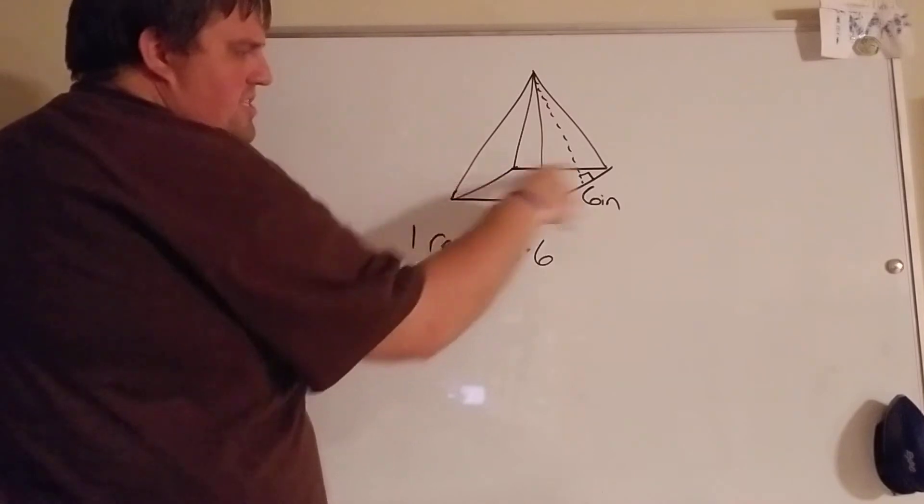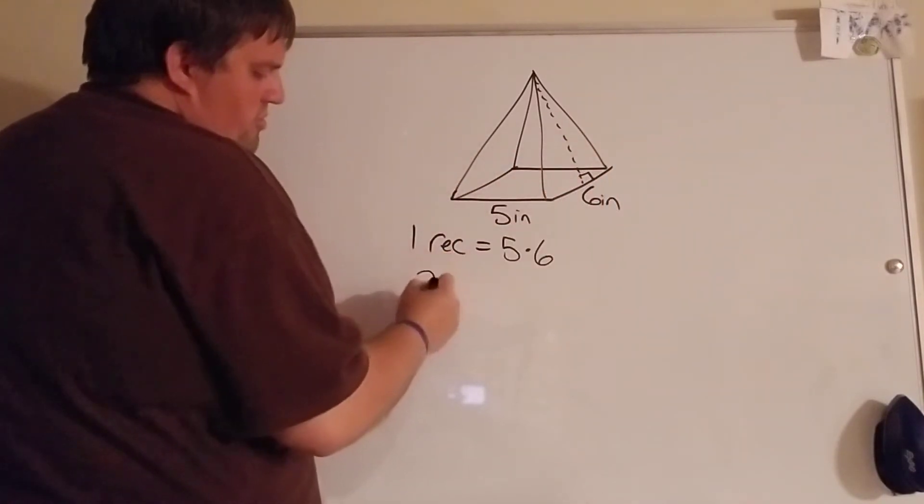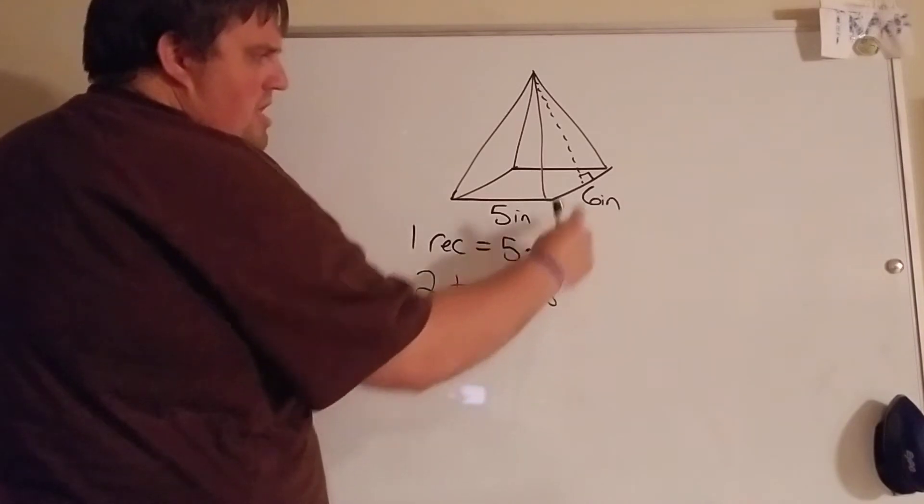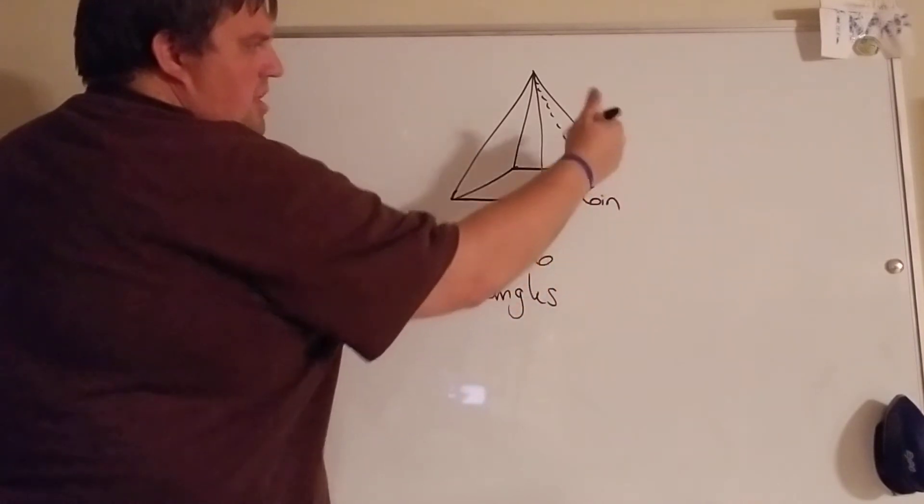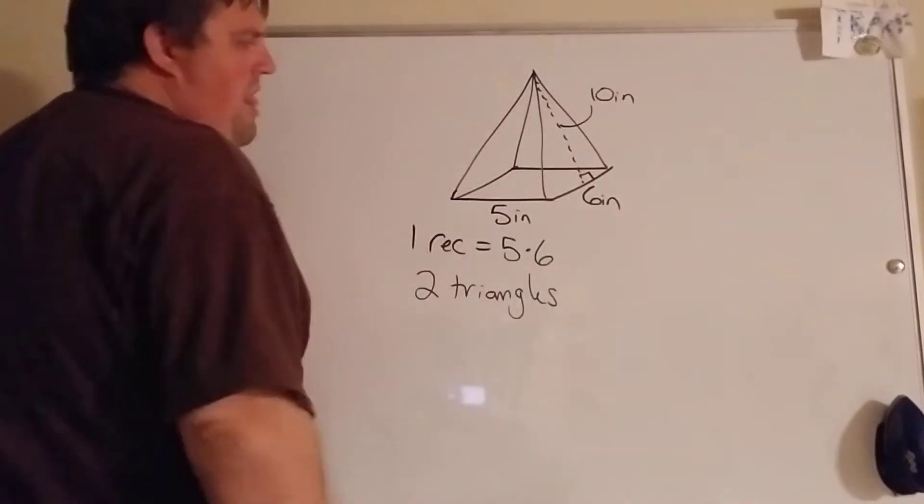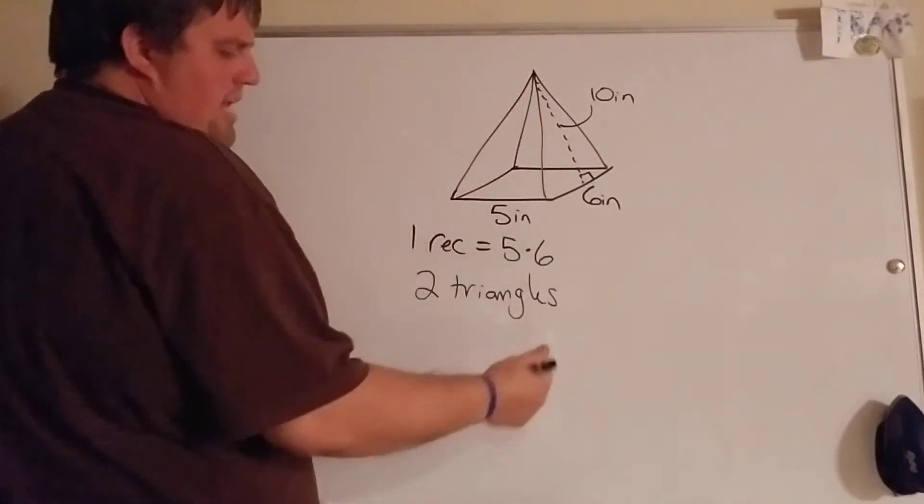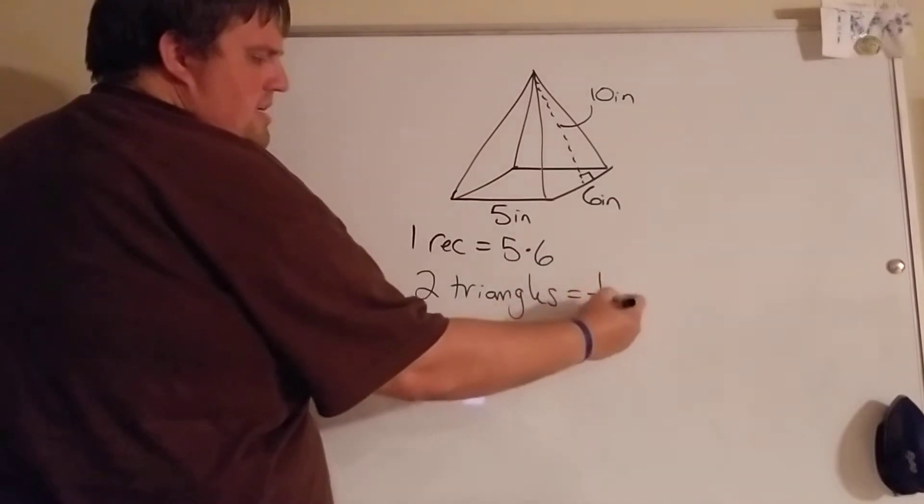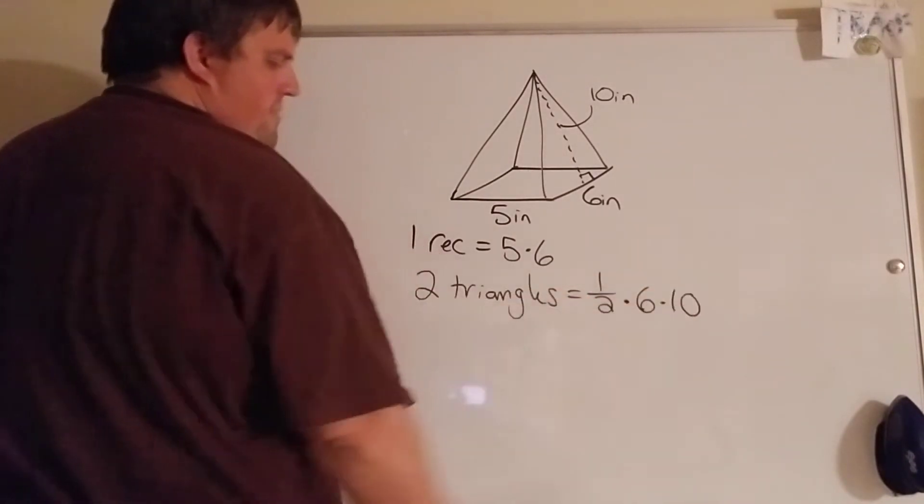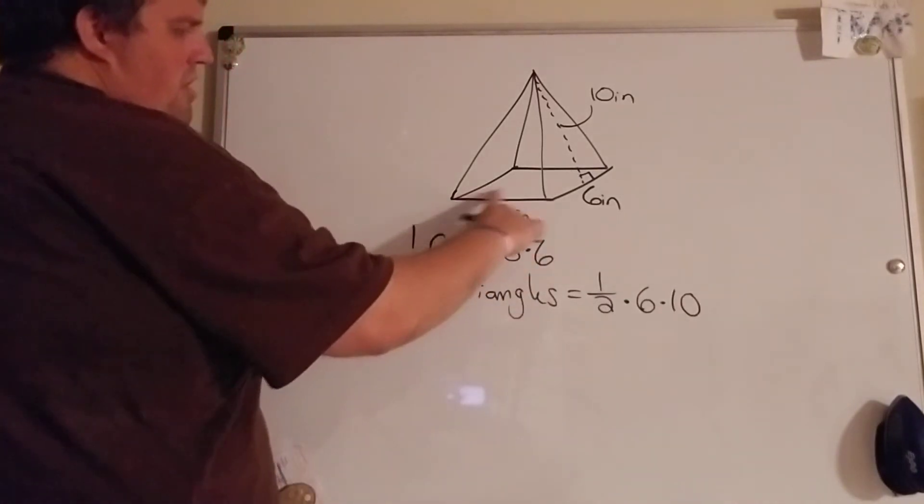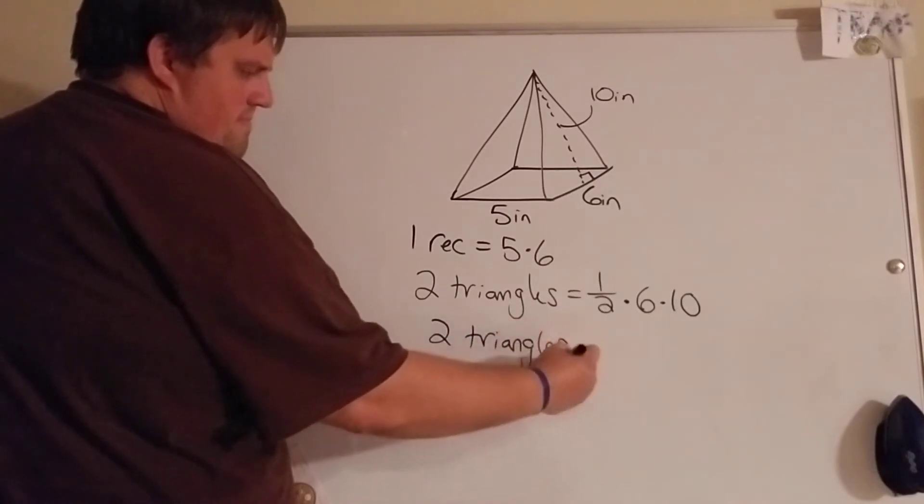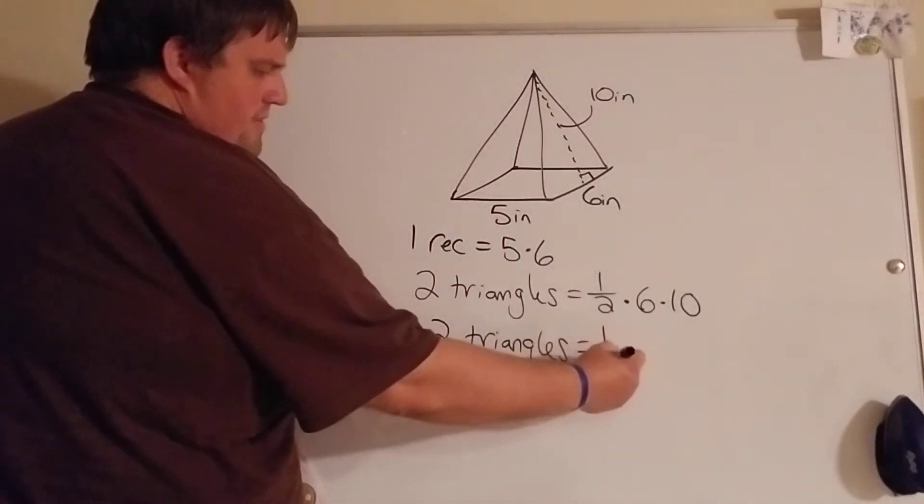So since this is a rectangle, we're gonna have two triangles that are six - oh I didn't even give you a height here, let's say it's ten - six by ten, one half times six times ten, one half base times height. And then we're also gonna have two more triangles that are one half times five times ten.